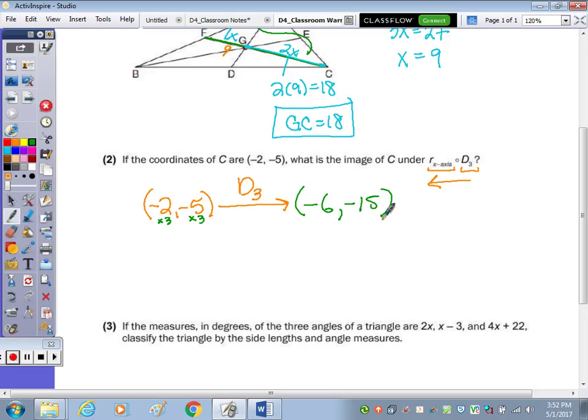Now I need to take that point (-6, -15) and reflect it over the x-axis. Without the rules in front of me, I'm going to sketch an x and y-axis. Negative 6, so I go left 6, down 15 is right here. We're going to reflect it over the x-axis,